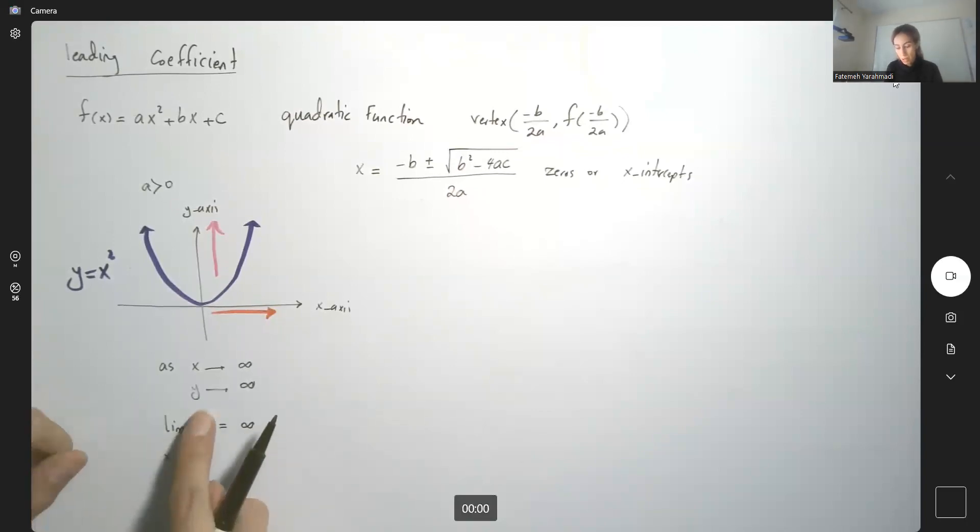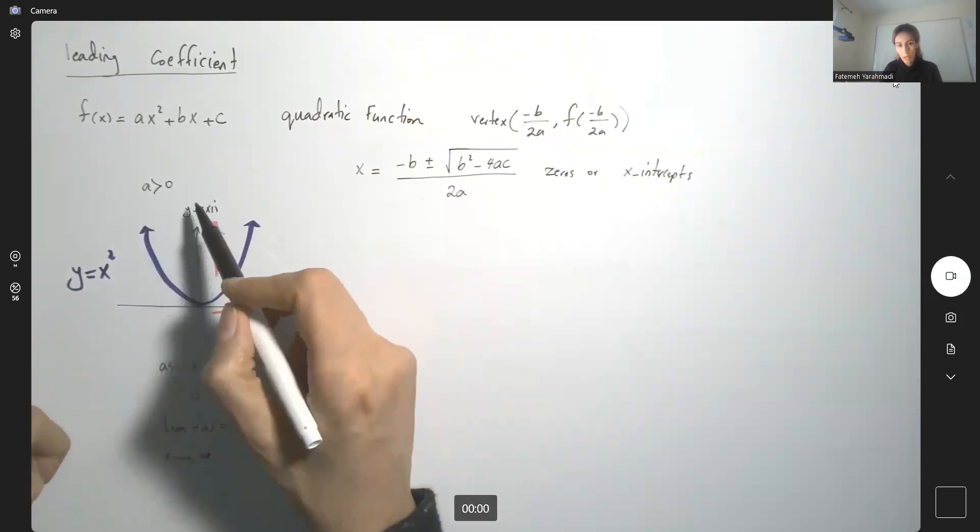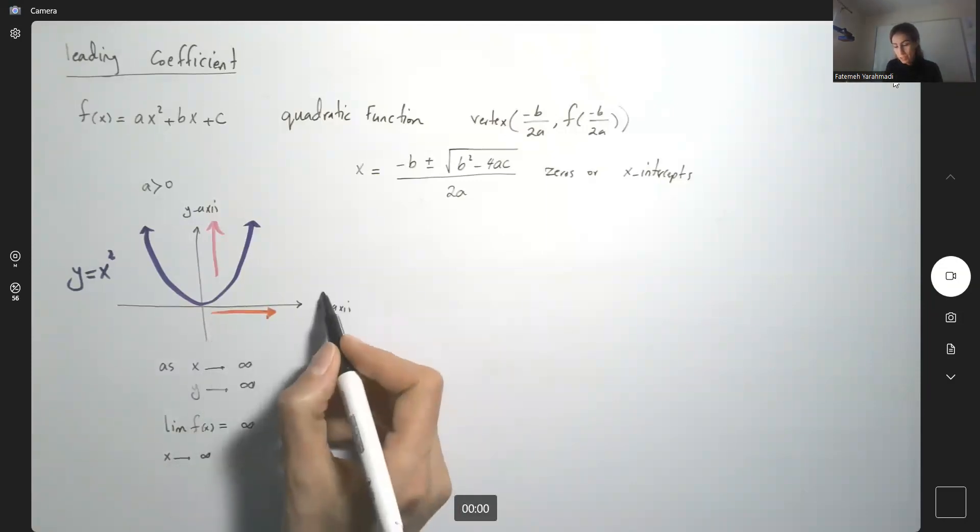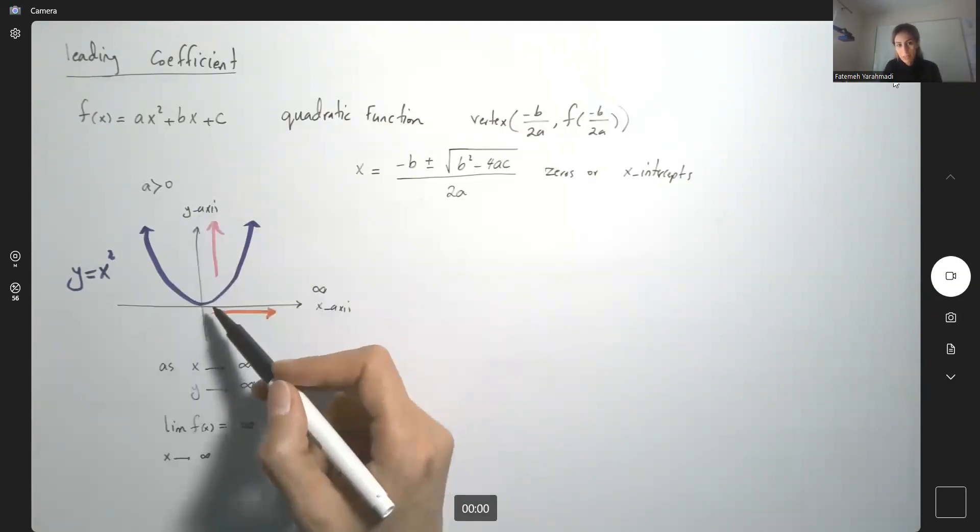Or the limit of function f of x—f of x and y represent the same thing. The limit of f of x as x goes to infinity is infinity. As x approaches to positive infinity, your y goes to positive infinity.